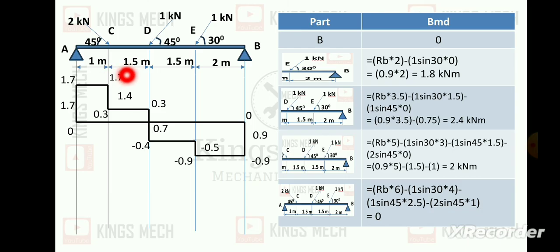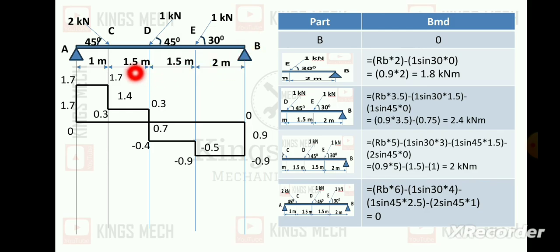At the final point near A: 1 kilo newton into covering distance 2.5, and 1 kilo newton into 3 plus 1 = 4, plus Rb into distances 3.5, 6, and 7. When all values are summed, the bending moment returns to 0, confirming equilibrium.